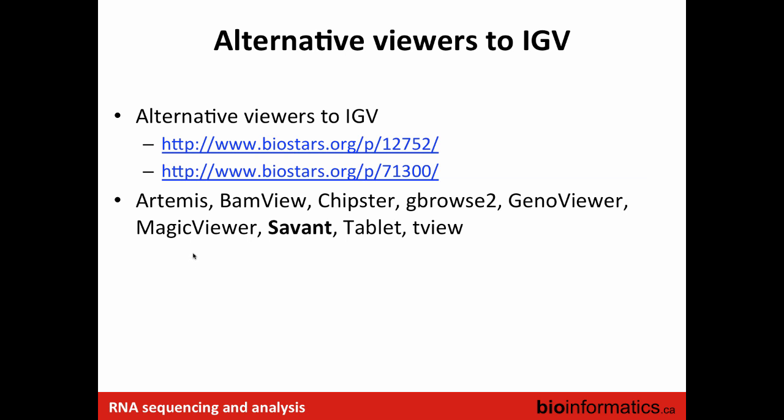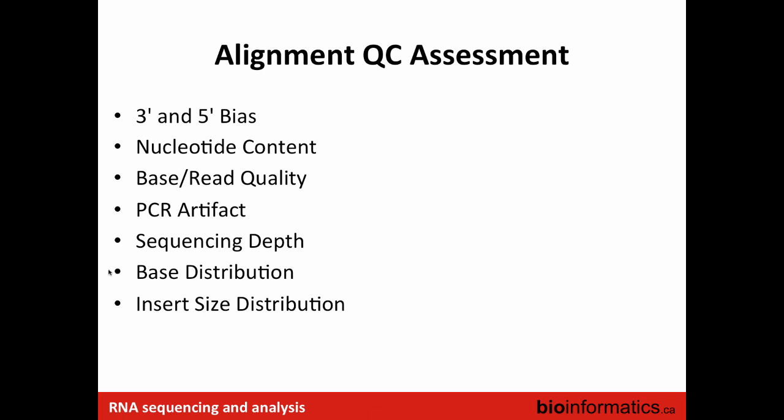Here are some other alternatives to IGV, though I personally haven't used any other visualization tool. It's really hard to pick a region because the transcriptome is so huge — unless you're interested in a specific gene, doing a targeted panel, or after differential expression analysis when you have a small list of genes to check. Otherwise, it's not efficient to assess the whole transcriptome using IGV. That's why you should use tools to assess QC for you. Here is a list of metrics you can look at to assess the QC of your alignments.